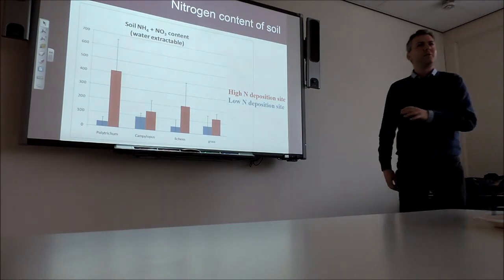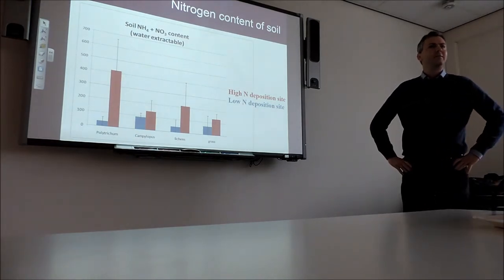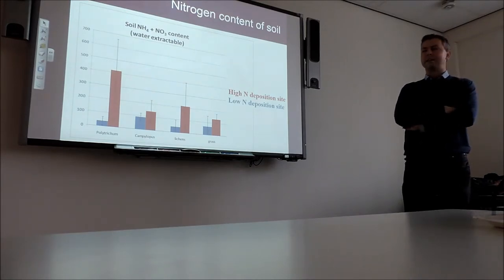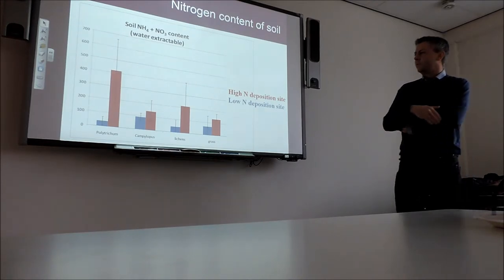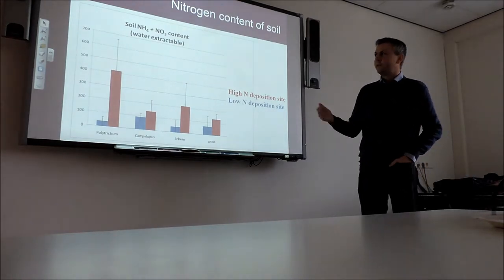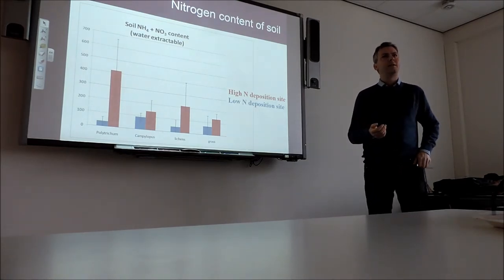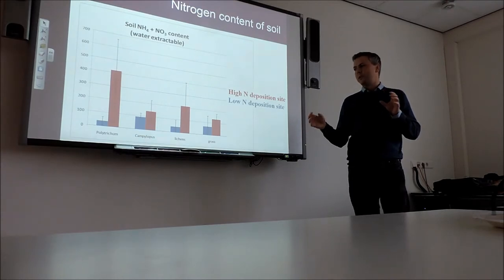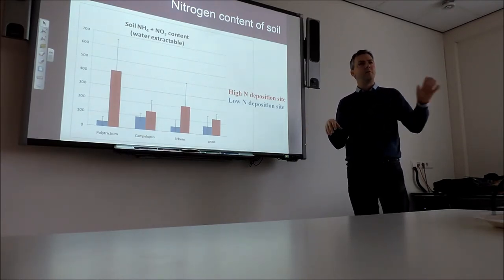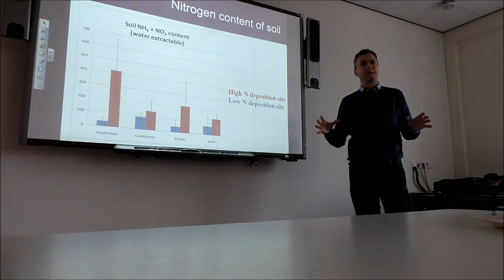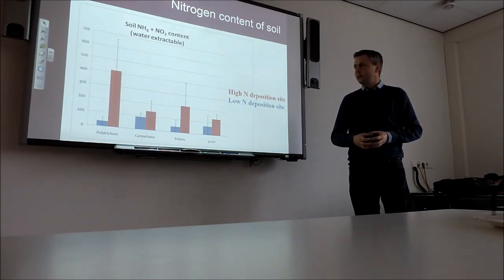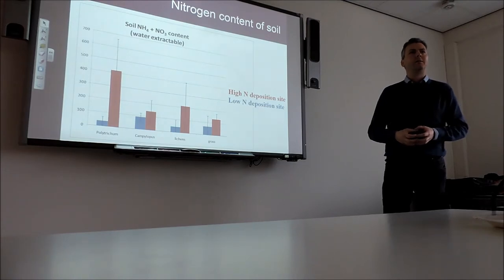During my research at the University of Amsterdam, I looked especially at the influence of nitrogen deposition on the vegetation and soil. One of the things I compared is what happens in the soil and plants when you compare two areas — one in the north of the Netherlands, a very clean site with no agricultural activities in the vicinity, and one in an area where big farms are just one or two kilometers away, so you have a lot of ammonia in the air.